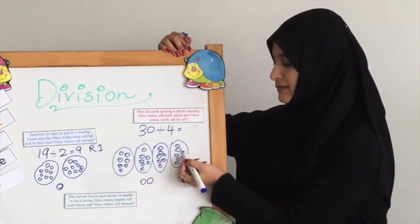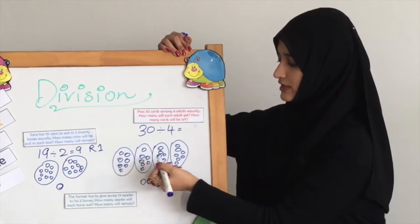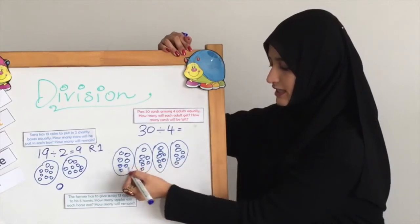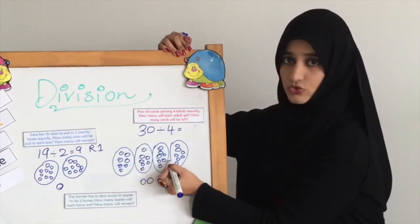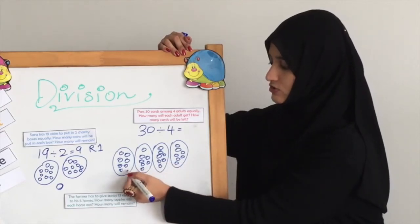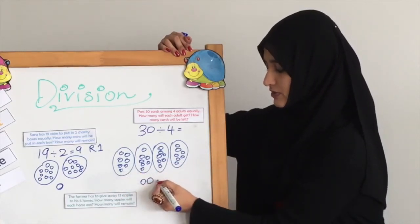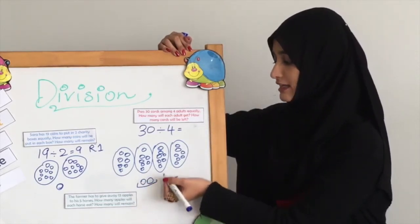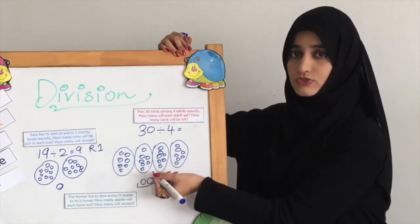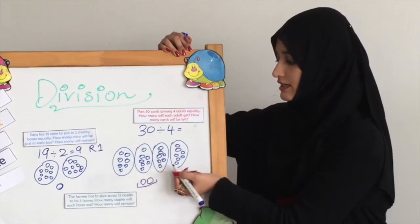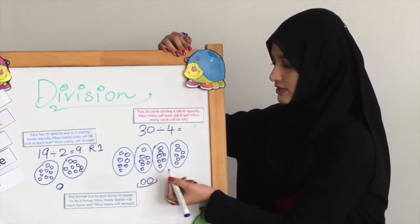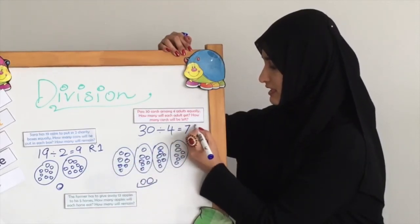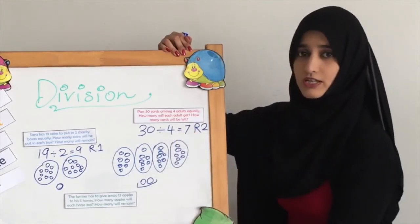We distributed equally and when we are distributing we make sure each one gets 1. When we came to 28, 29, and 30 — these 2 don't have a card to get. So we need to take these 2 cards and put them here because these are remaining. These are the ones that cannot be distributed. And if we give them these cards, it's going to be unfair and it's going to be unequal. So the answer to this question is 7 cards and the remainder is 2 cards.